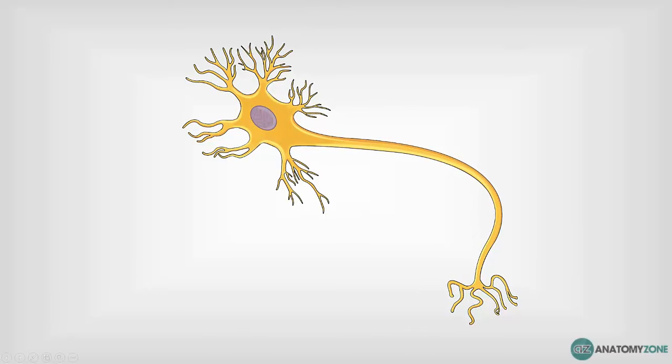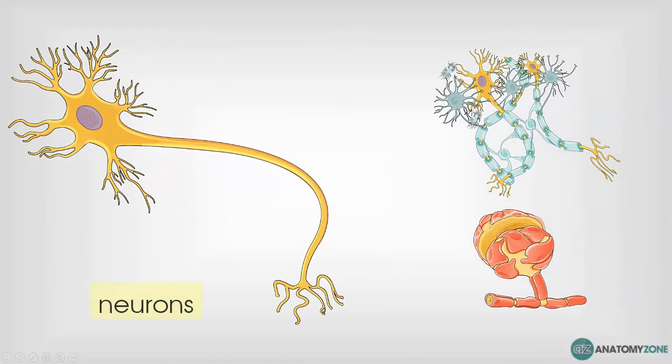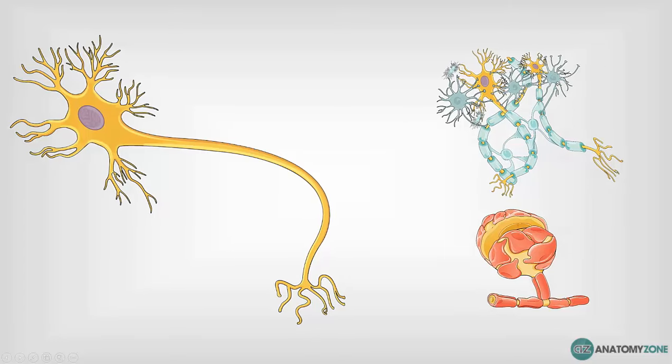Nervous tissue is composed of two different types of cells: neurons and glial cells. On the right hand side of the screen you can see these various different glial cells interacting with the neuron. But I'm going to focus on the structure of the neuron in this tutorial.